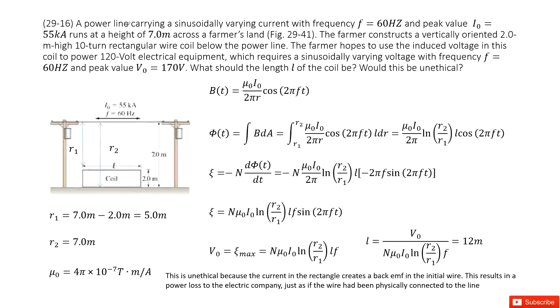So you can see we have a power line. And this power line carries a current that changes with frequency f, and the peak value is given as I₀. The formula is given just above.